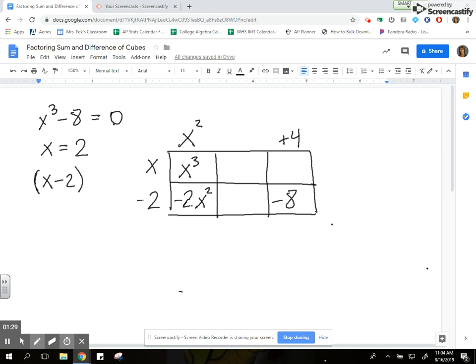I need this negative 2 x squared to cancel out with a positive 2 x squared. So I can write that in and then I know that this has to be a positive 2 x in order to make that work. Positive 4 times x gives me a positive 4 x. So again, I need this to be a negative 4 x to cancel it out.